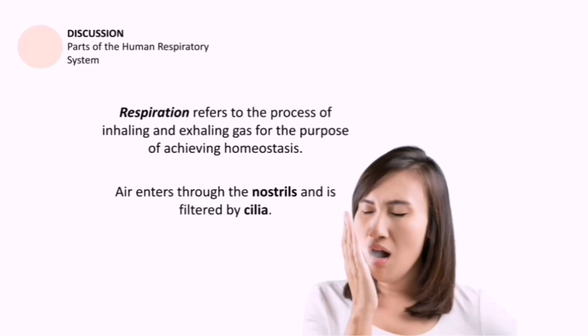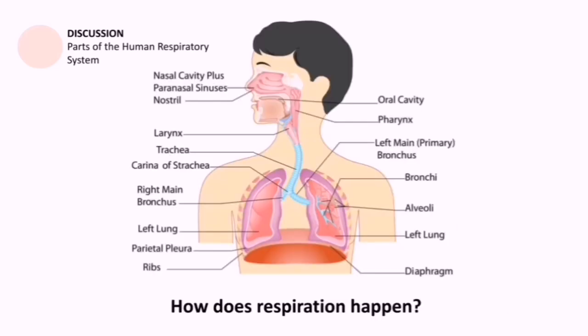In this process, the air enters the nostrils and is filtered by cilia, which are hair projections inside your nose. When we talk about the parts of the human respiratory system, we are more concerned about the process of inhaling and exhaling — the process of respiration. Where is air going to enter the body? Where does it proceed next, and then where next, until it comes to a point when it is going to leave the body?